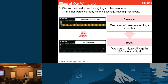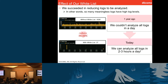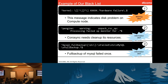We have enhanced our whitelist, and as a result we have been reducing the logs to be analyzed. In other words, many meaningless error or warning logs bother OpenStack operators. As you can see in these two Kibana graphs, our whitelist is very effective. One year ago when we did dog-fooding, we could not analyze all logs. Today, two or three hours are sufficient to analyze all logs.